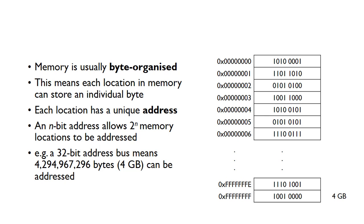For example, if we had a 32-bit address, it would mean we would be able to address 4,294,967,296 bytes of memory, and that is actually the equivalent of 4 gigabytes. So if you remember when 32-bit operating systems were common, the maximum amount of RAM you could have installed was 4 gigabytes. This 32-bit operating system limited the amount of memory that could be addressed, but this kind of limit has disappeared with 64-bit operating systems.